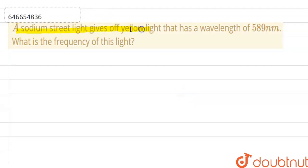A sodium street light gives off yellow light that has a wavelength of 589 nanometer. What is the frequency of this light?